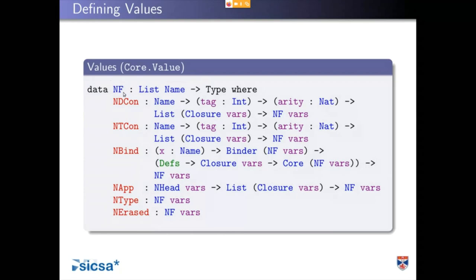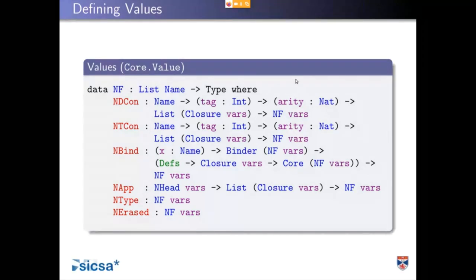NF could sometimes be a bit confusing because actually this is a head normal form. We're going to compute the head — that is the constructor or binder at the head — and then the rest of the terms or the constructor's arguments, we'll just compute them as we need them.